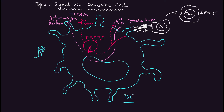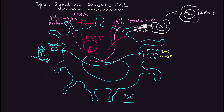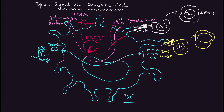For fungal antigens, the dendritic cell uses the dectin receptor on its surface to detect fungi. Via the nucleus signaling pathway, this produces interleukin-6 and interleukin-23. The dendritic cell also presents the antigenic parts using MHC surface receptors to naive T-cells, which then differentiate into the Th17 subset, causing production of interleukin-17.